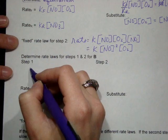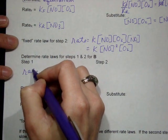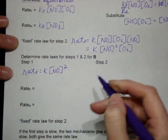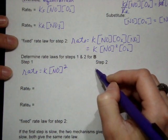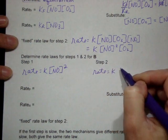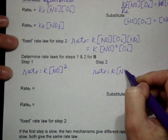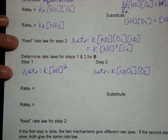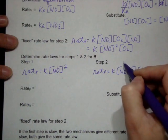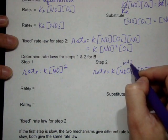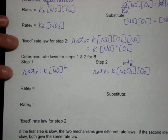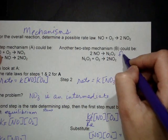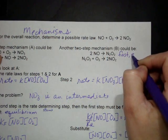First, we need to write the rate for step one. Rate equals K times NO squared. For step two for that one, we have rate equals K times N2O2 times O2. Again, we have another intermediate in there. We can't have that present in our reaction so we need to show that the first step is fast and at equilibrium.